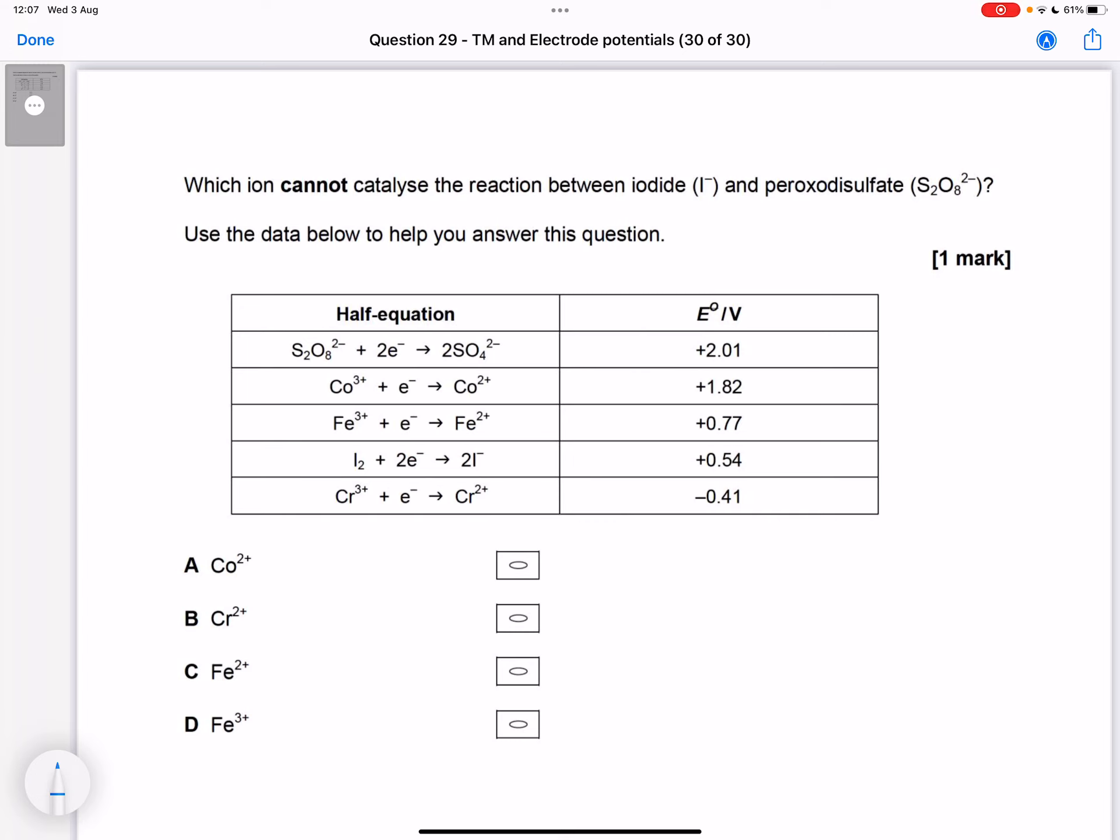So the peroxodisulfate is here, the iodide is here. They react together, although the reaction is going to be slow because two negative ions are going to repel.